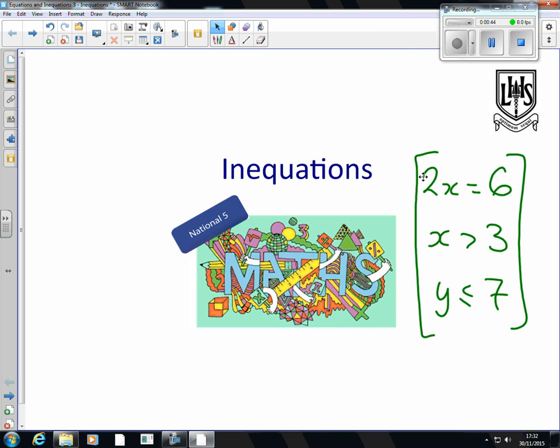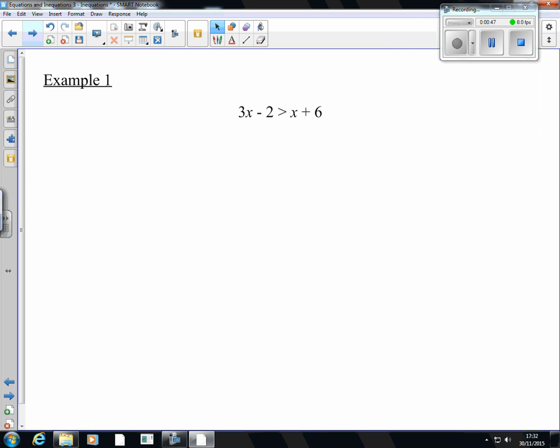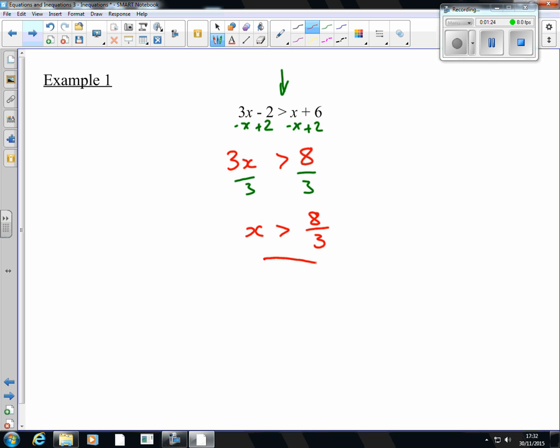Now, we're actually going to learn something new, so you're not going to copy around every slide, but this first one is a revision slide of what we did in National 4. We solve these by doing the same processes, but instead of having an equal sign, we've got an inequality. So we're going to do the same processes, plus 2 to both sides, subtract x from both sides, and that's going to leave us with 3x > 8. Divide by 3, divide by 3, then x is got to be greater than 8 over 3.